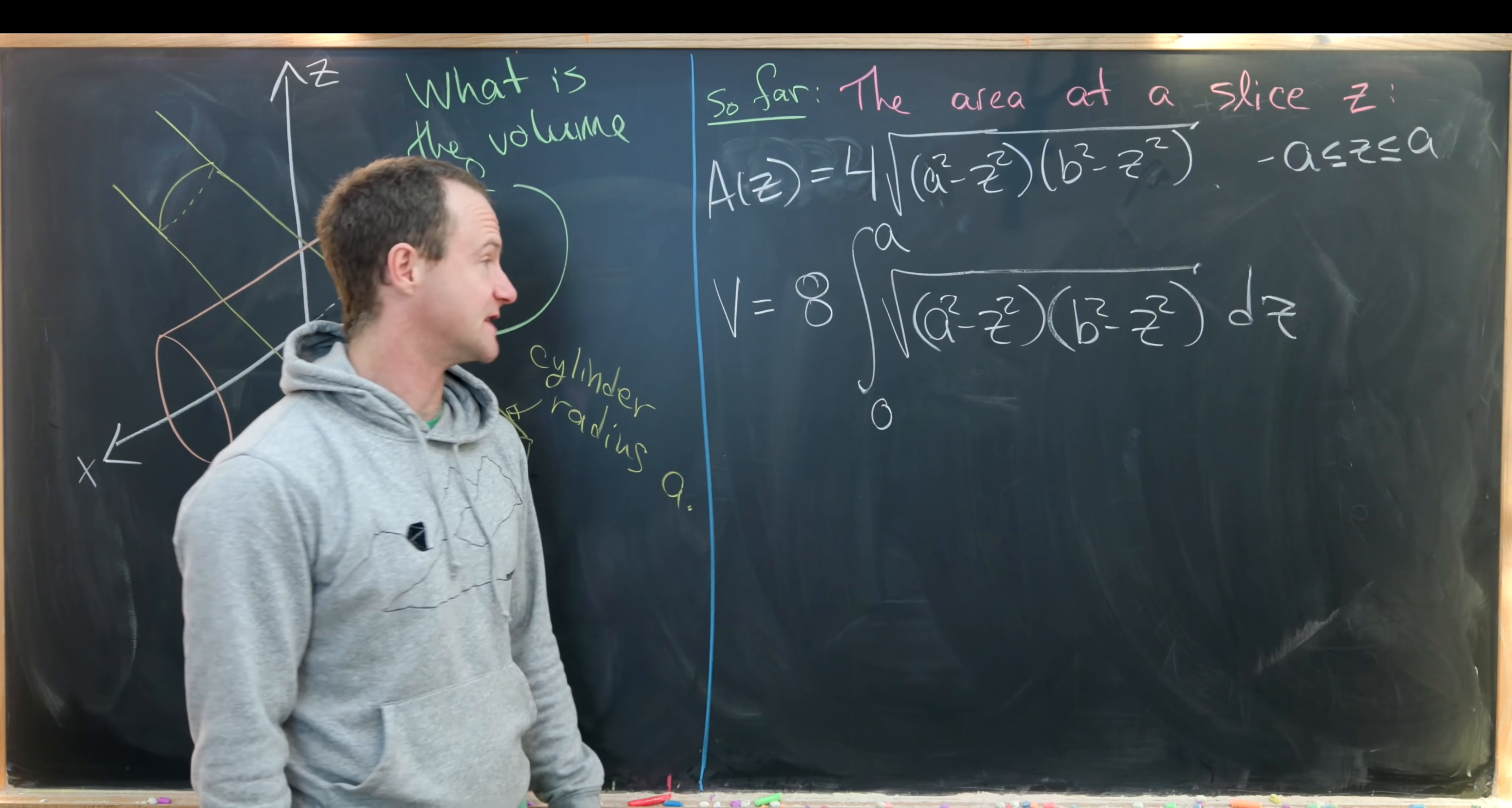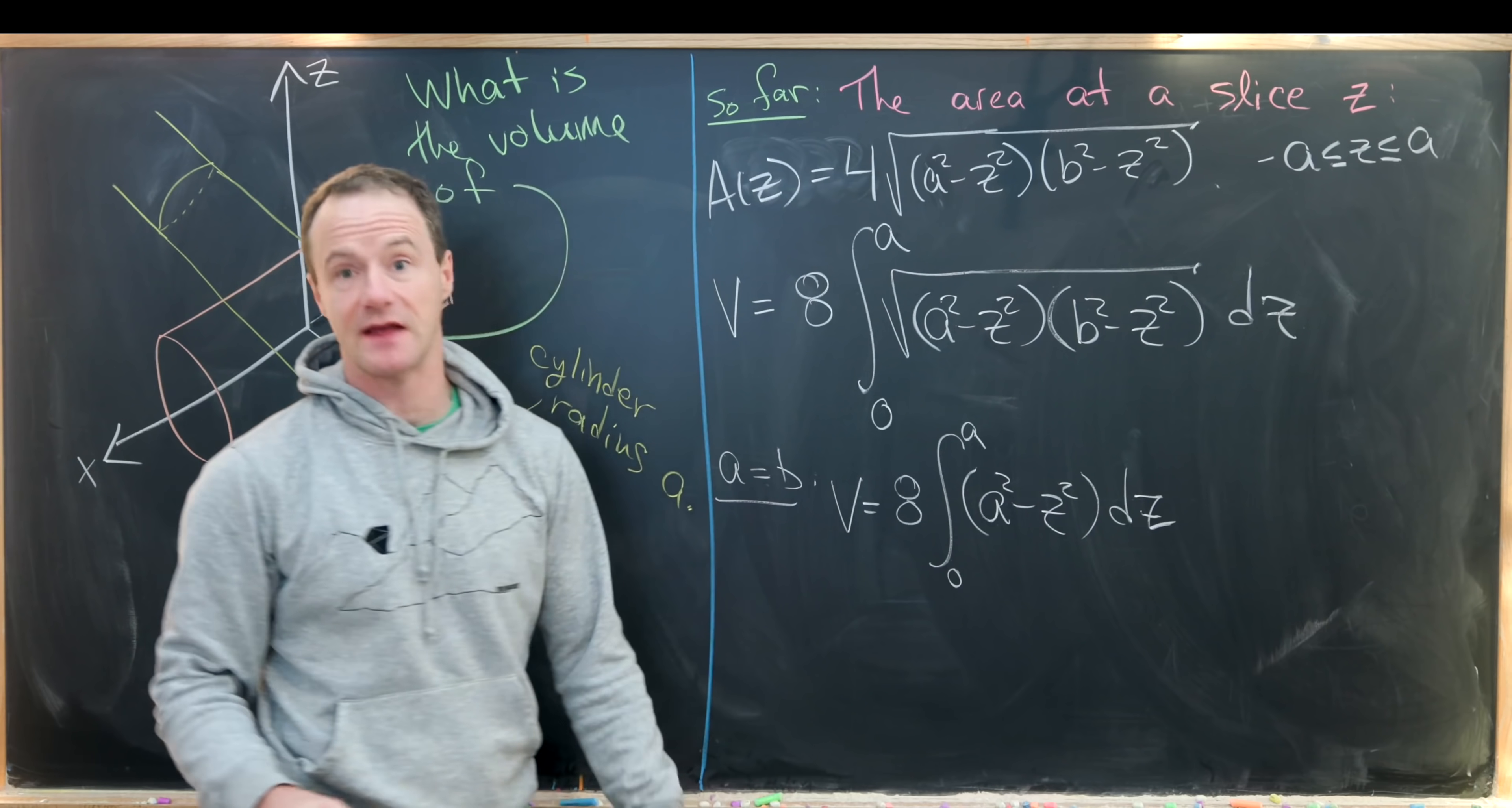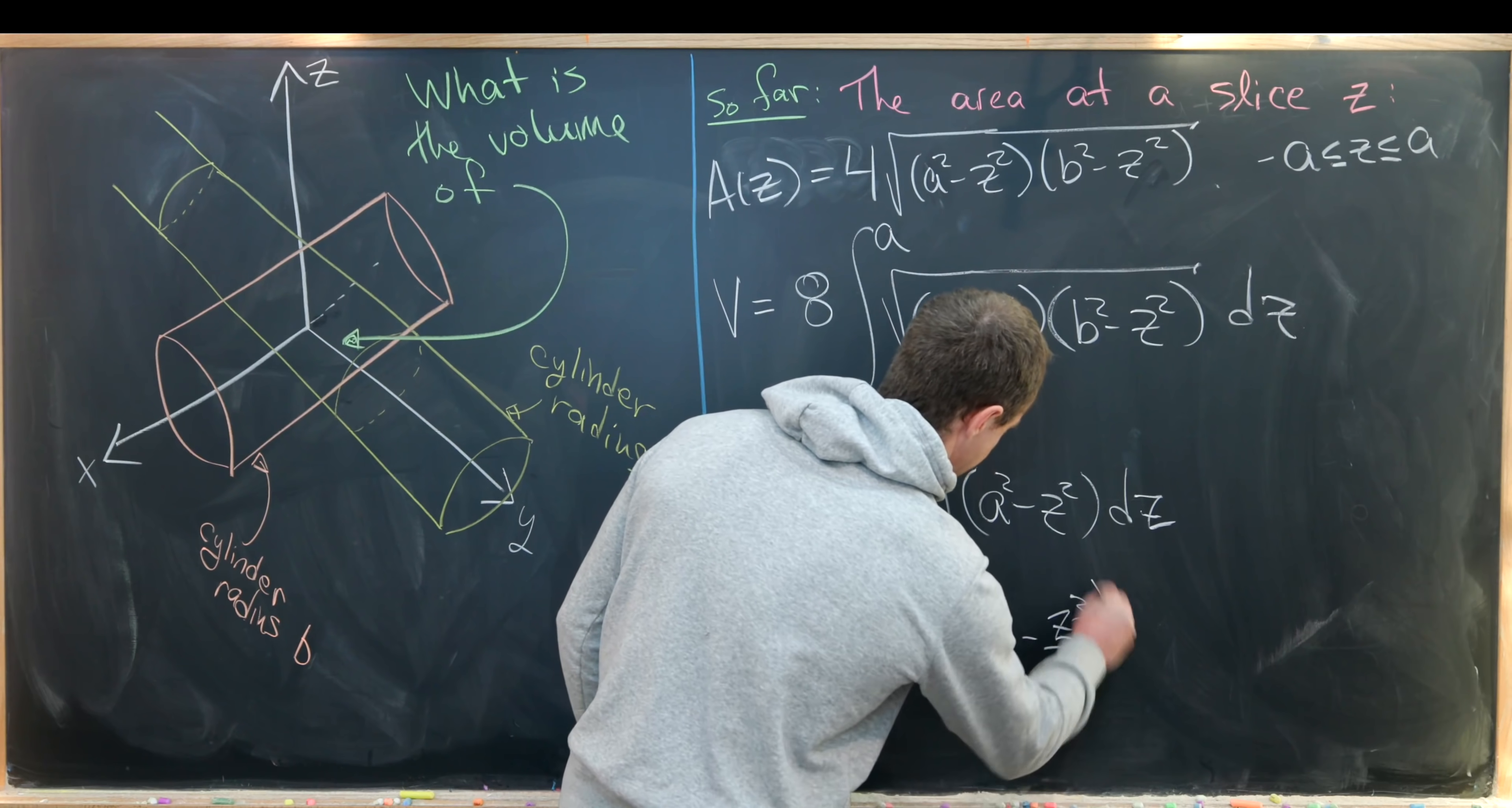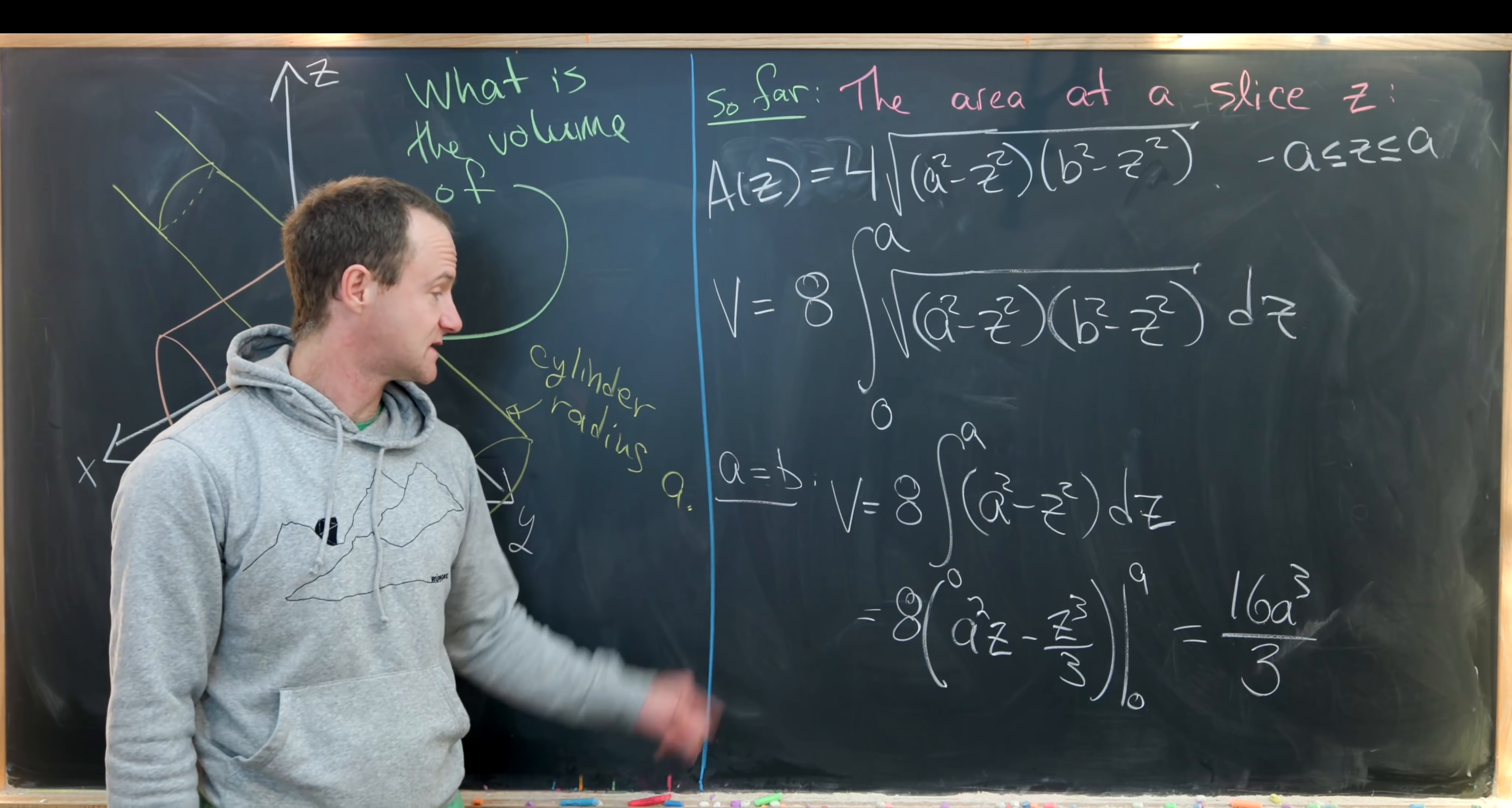Let's look at the special case when a equals b. Then we'll have the volume equal to 8, and then the integral from zero to a of a² - z² dz. Because those two are the same, so the square and square root cancel each other. But now this is just a polynomial function. It's fairly easy to take the antiderivative. So we'll have 8, and then a²z - z³/3, evaluated from zero to a. Evaluating at the upper endpoint gives us 16a³/3. Evaluating the lower endpoint gives us zero. So that's the volume in the case when a equals b.